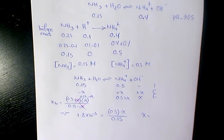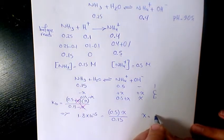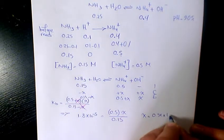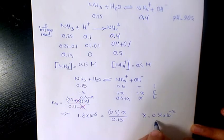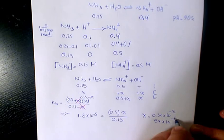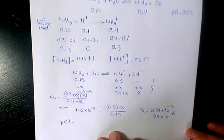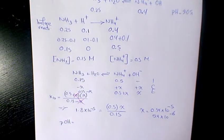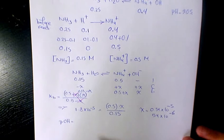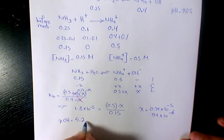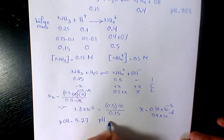That will be 0.54 × 10⁻⁵, or I can say 5.4 × 10⁻⁶ mol per liter. If you want to find out the pOH, negative log of 5.4 × 10⁻⁶ that will make it 5.27. So pH will be 14 minus 5.27.